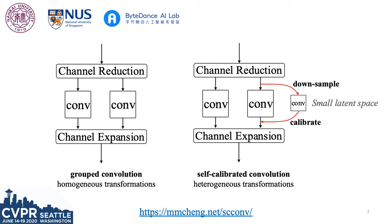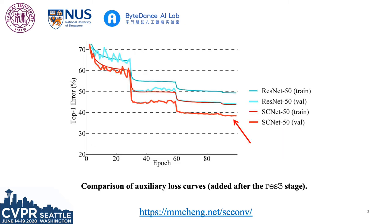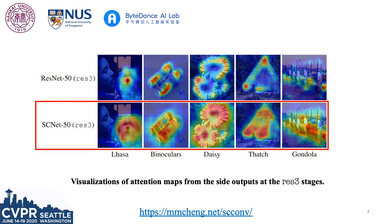By adaptively building long-range spatial and inter-channel dependencies around each spatial location, from the curves we can find that even at a lower depth of the network, self-calibrated convolutions work better.